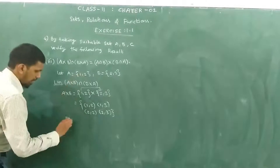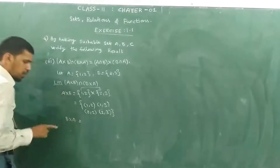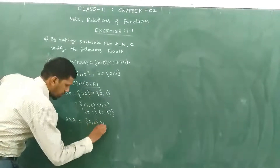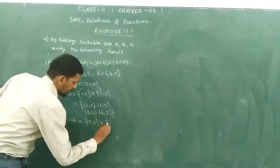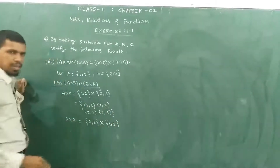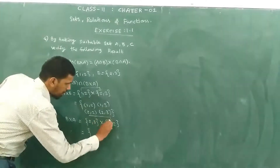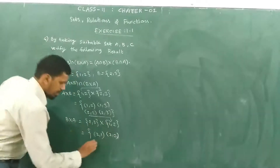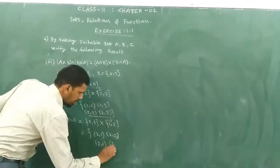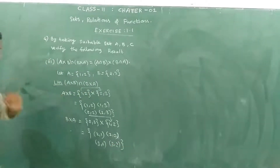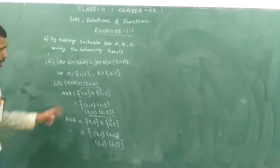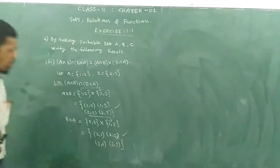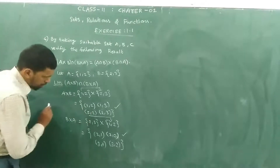Now B cross A. B set is {2,3} cross A set {1,2}. We make the Cartesian product to get pairs: (2,1), (2,2), (3,1), (3,2).